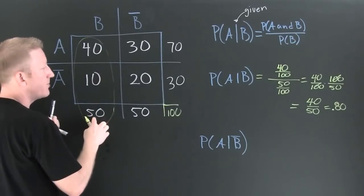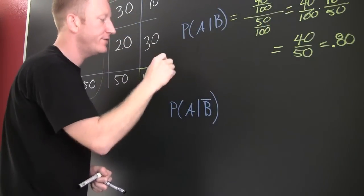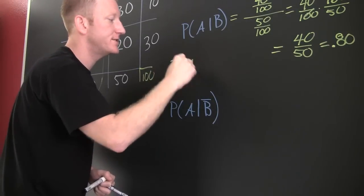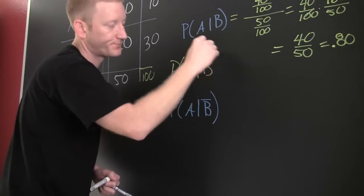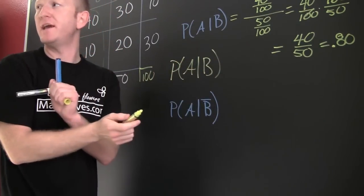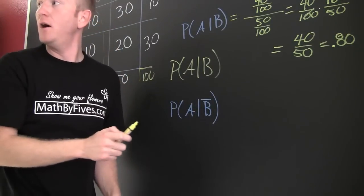40 divided by 50. So then the probability of B given A, we go back and take a look at this. This is A given B. I suppose we could have done B given A, but then we would have had to have switched our rows.